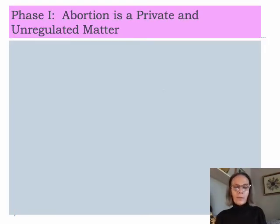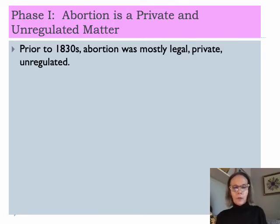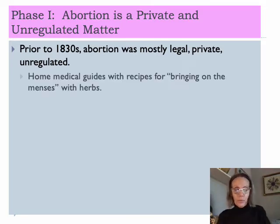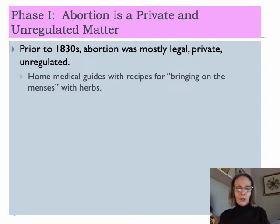Phase one of abortion policy is that abortion is a private and largely unregulated matter. Prior to the 1830s, abortion was mostly legal. It was viewed as a private practice and generally unregulated by the state — very similar to the policy approaches of contraception at this time period. Women would share information with each other through their midwives and through other women they knew in their community.